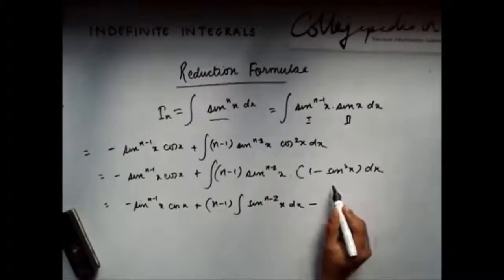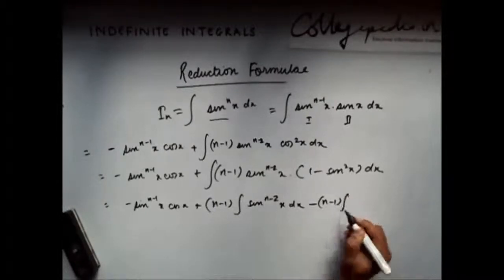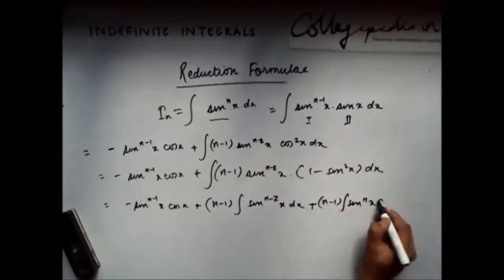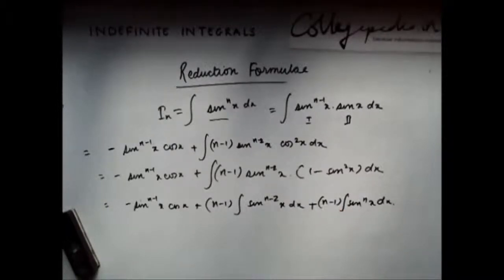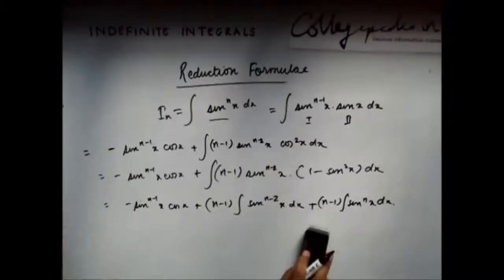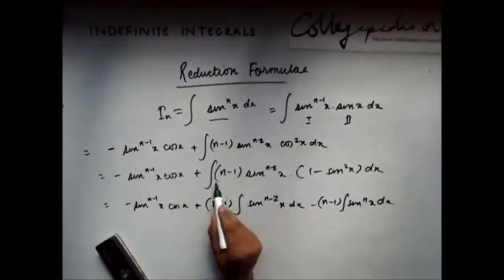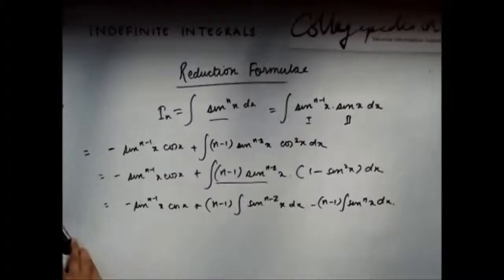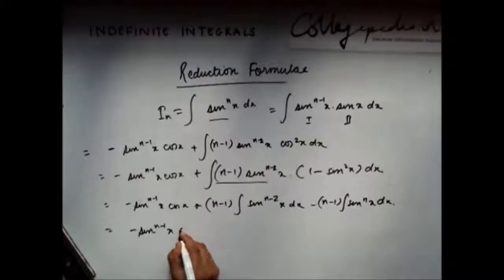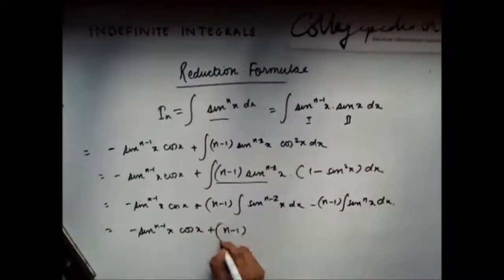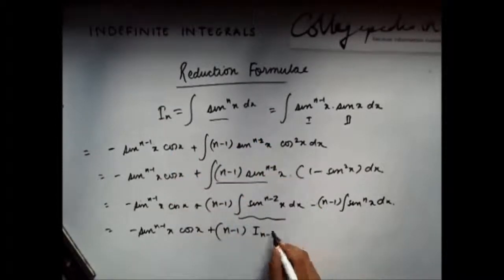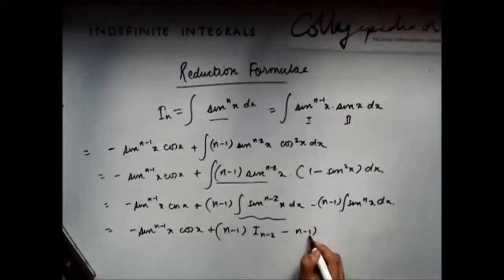So here we will have a minus sign — because this is a positive sign — and here we will also have a minus sign. So I can write this as minus sin^(n−1)(x)cos(x) plus (n−1) times I_(n−2) minus (n−1) times I_n, since I_n is the integral of sin^n(x) and I_(n−2) is the integral of sin^(n−2)(x).